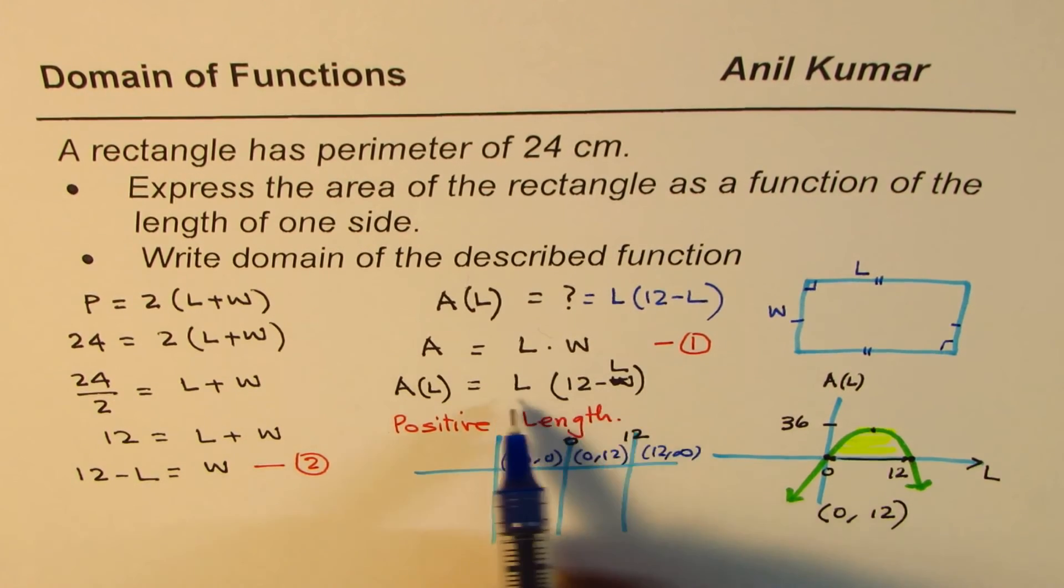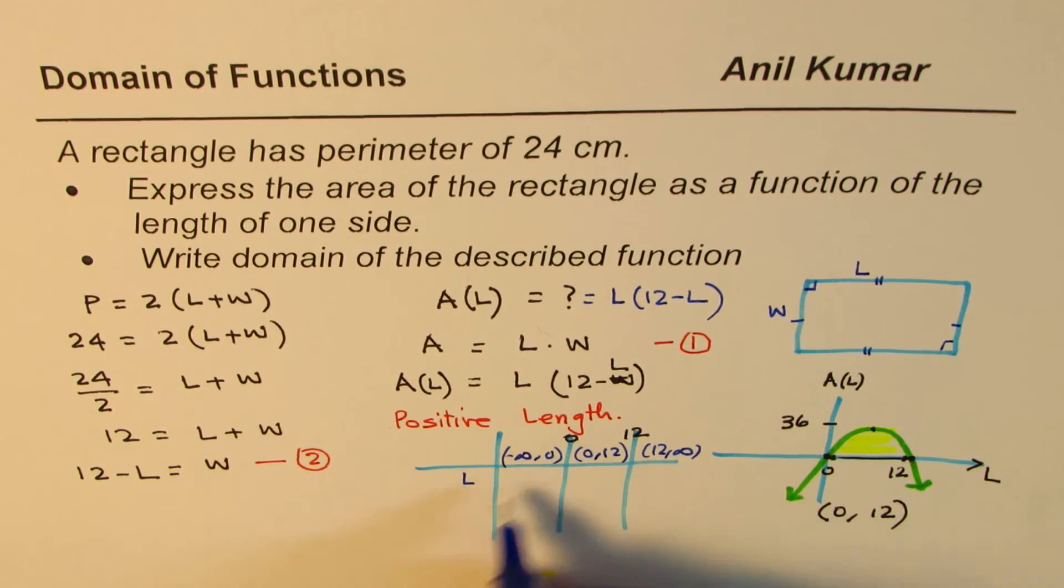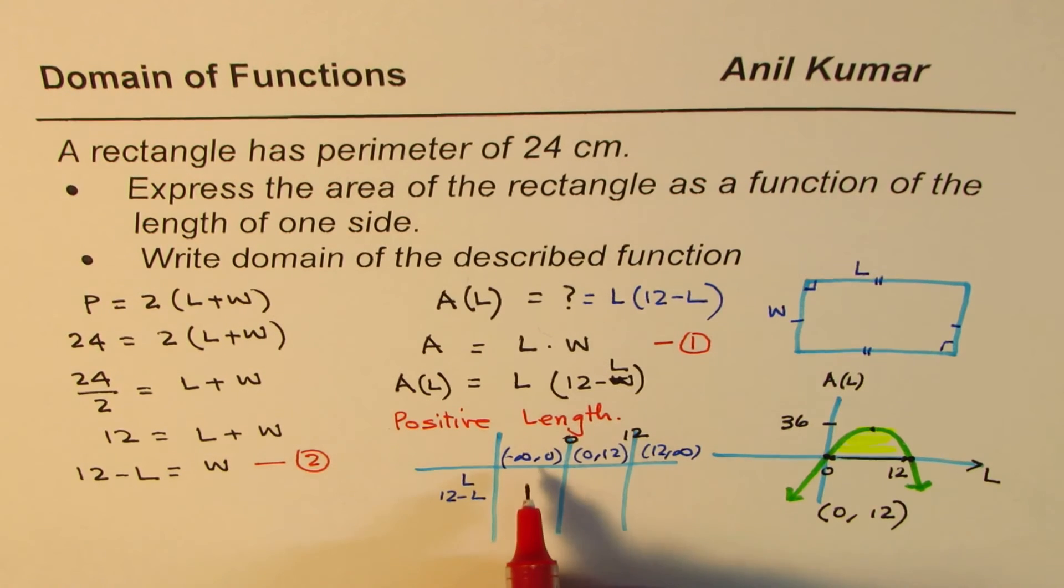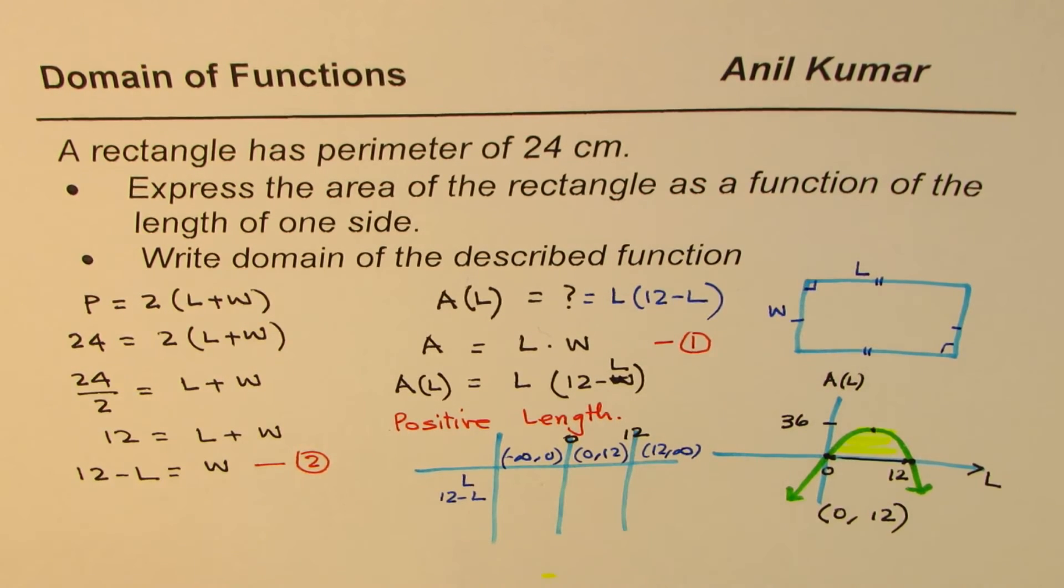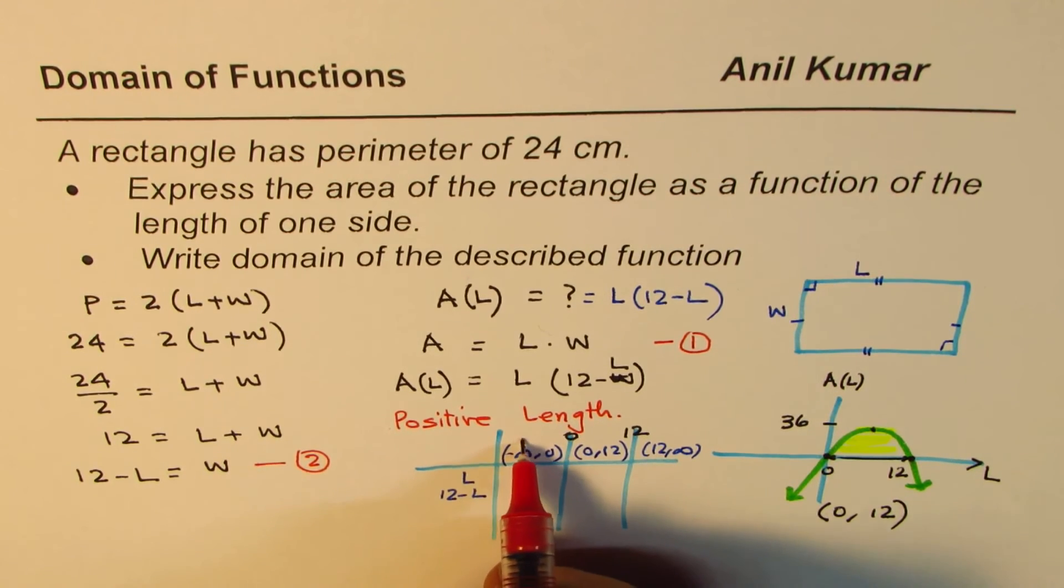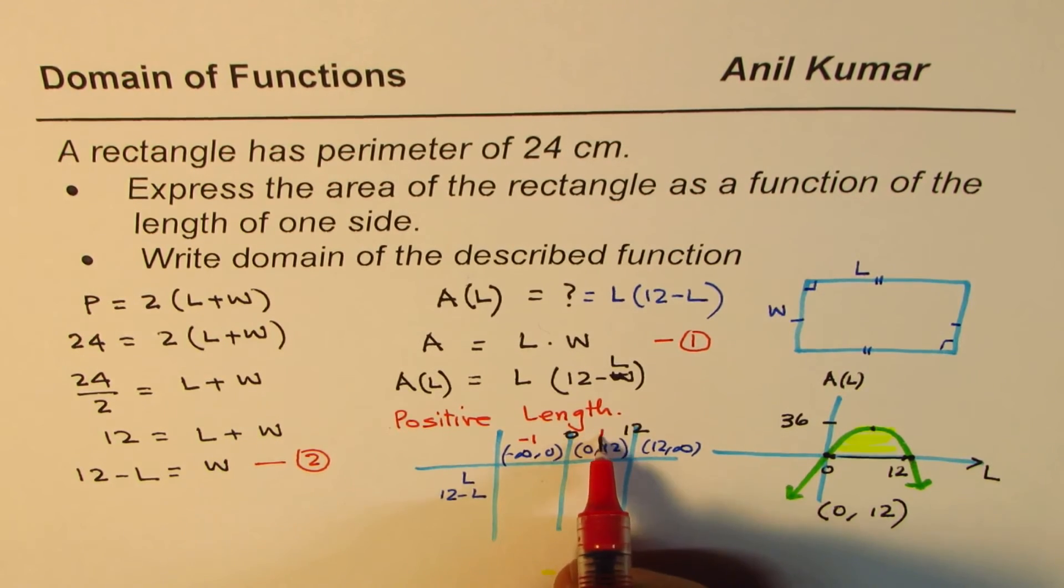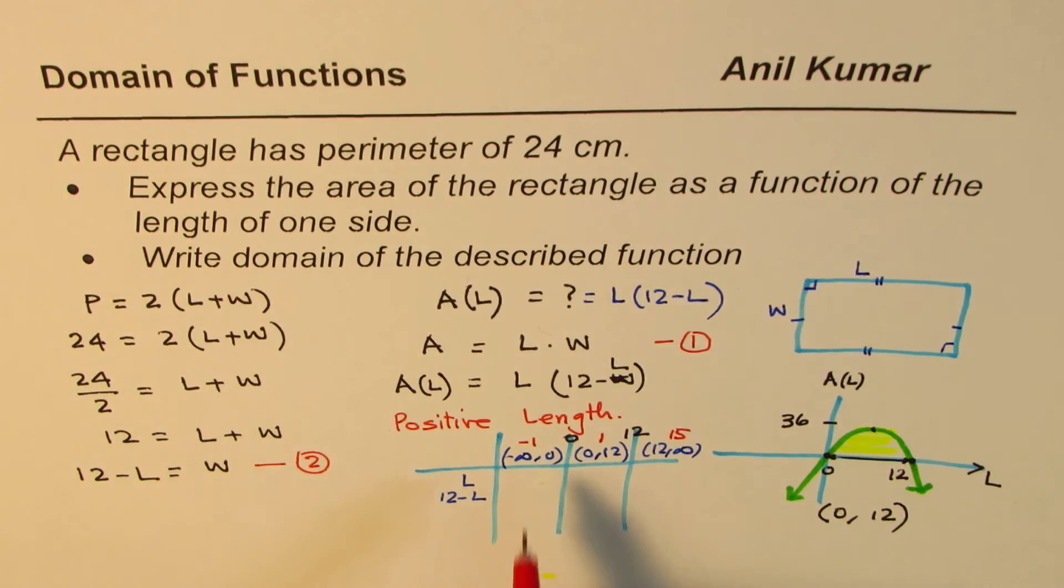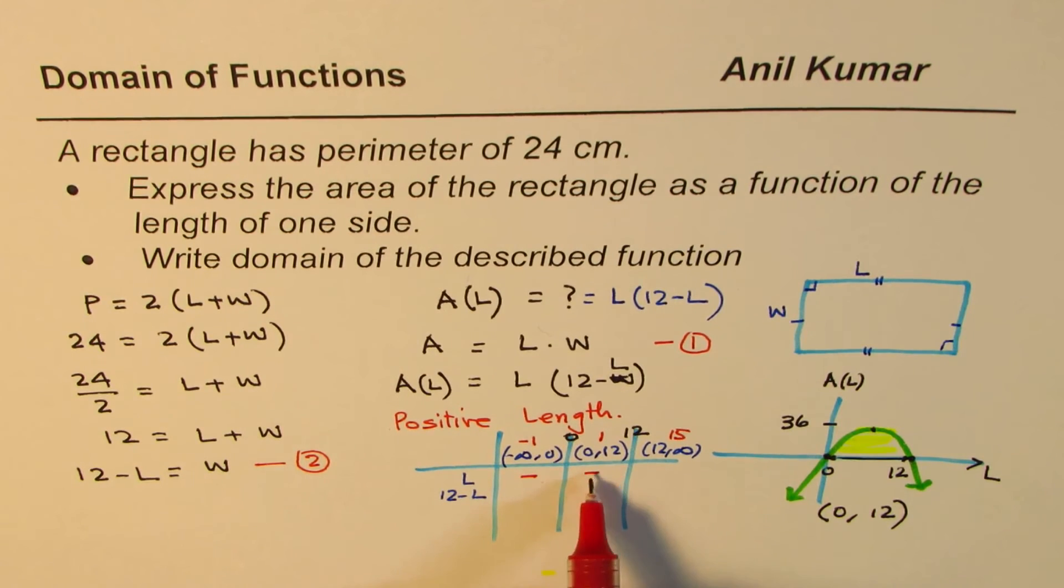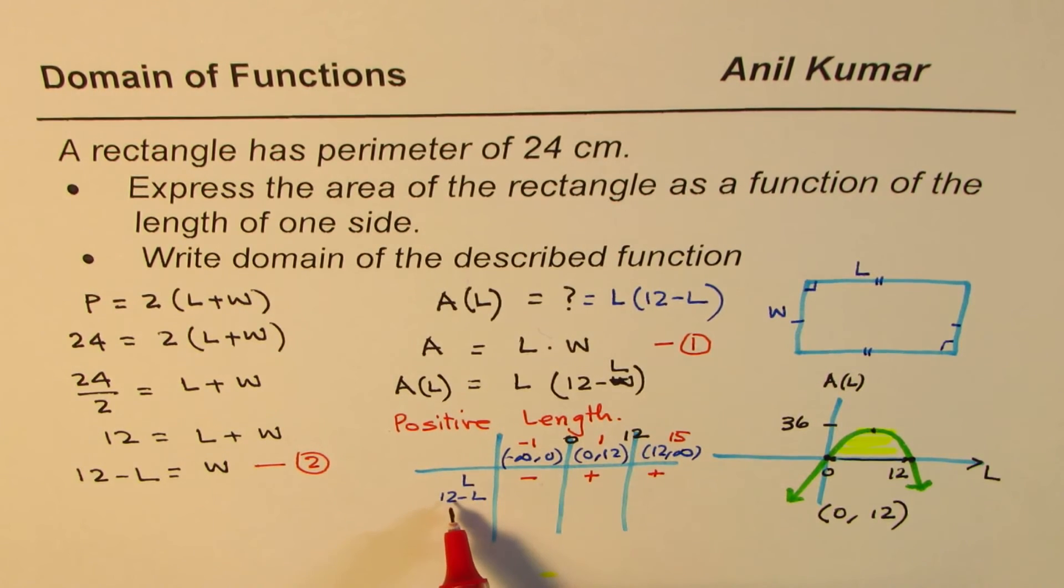Now what we do here is we just test these two factors. One is L, the other one is 12 minus L. So if I substitute a test point, let the test point in this interval be minus 1. Here we could take 1, and here we could take 15. So if I write minus 1 here, L will be minus 1. We are only interested in sign, so I'm just putting the sign. Minus 1 here, 12 minus minus 1 is positive.